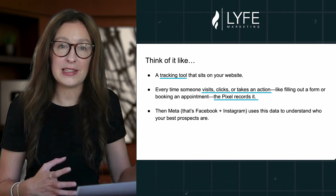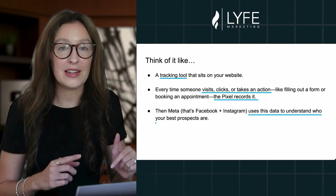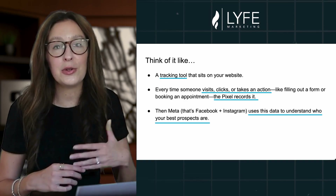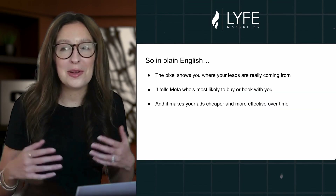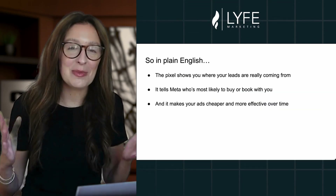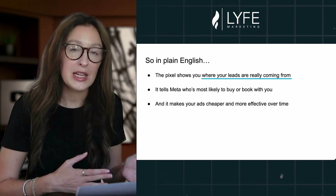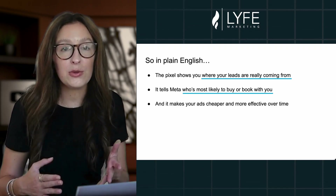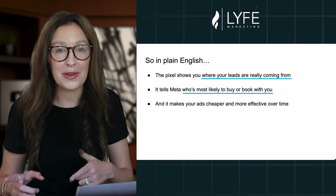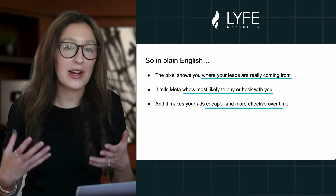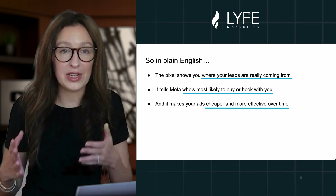Then Meta — that's Facebook and Instagram — uses this data to understand who your best prospects are. So in plain English, the Pixel shows you where your leads are really coming from, it tells Meta who's most likely to buy or book with you, and it makes your ads cheaper and more effective over time.